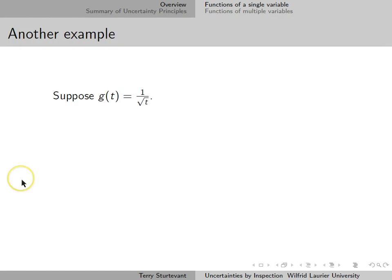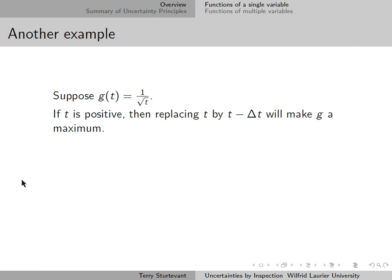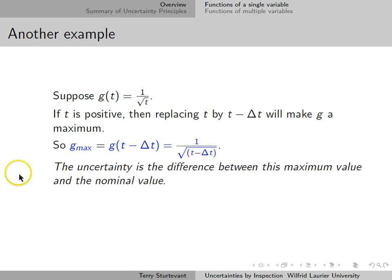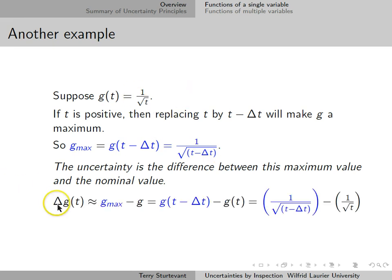Here's another example. Suppose we have a function g of t, which is 1 over the square root of t. If t is positive, then replacing t by t minus delta t will make g a maximum. So, g_max is 1 over the square root of (t minus delta t). Again, the uncertainty is the difference between this maximum value and the nominal value, so the uncertainty in g is g_max minus g_nominal.